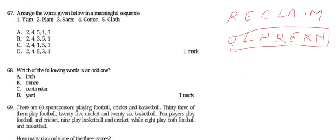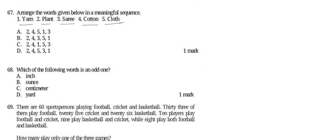Question 67 says: arrange the words given below in a meaningful sequence — yarn, plant, sari, cotton, cloth. We need to arrange these in a meaningful sequence. As you can see, these all represent a process of making a sari, so we need to follow this process to make a piece of dress.